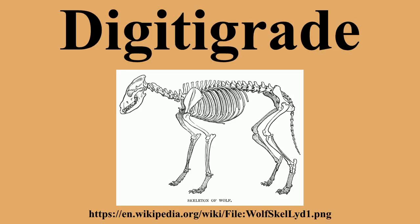Humans usually walk with the soles of the feet on the ground, in plantigrade locomotion. In contrast, digitigrade animals walk on the distal and intermediate phalanges.